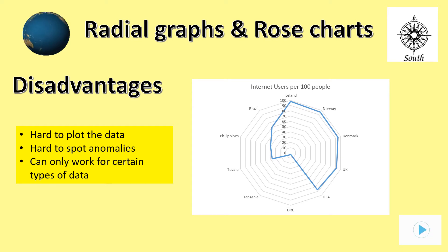Some of the disadvantages, though, are that it's hard to plot the data accurately. Anomalies and odd results are sometimes very hard to spot and it can only work with certain types of data. Also, if the data range itself is very large, then it makes it hard to properly read the chart. Pause the show now and ensure you know a few of the disadvantages of using radial graphs and rose charts.